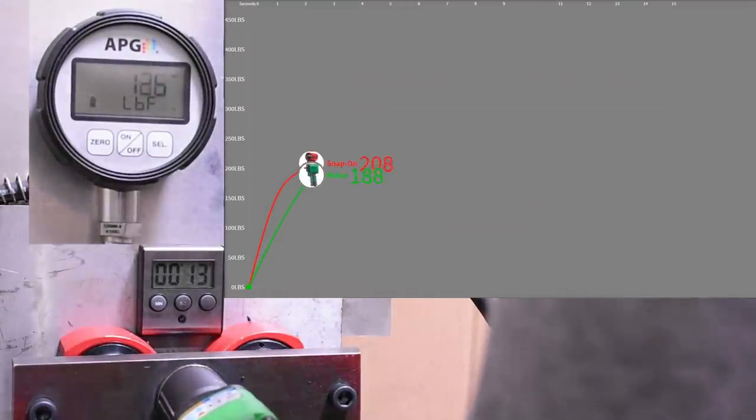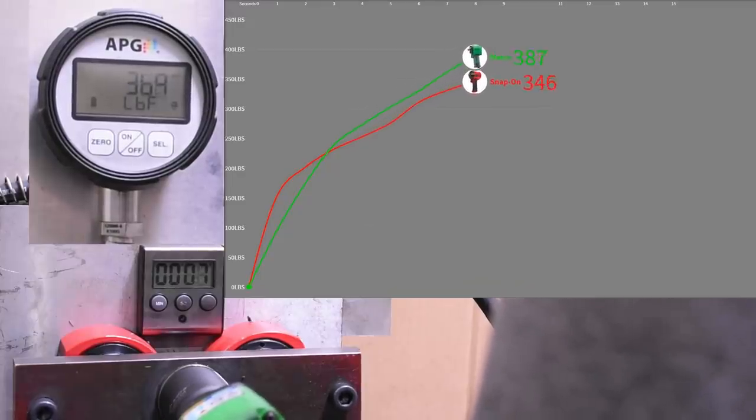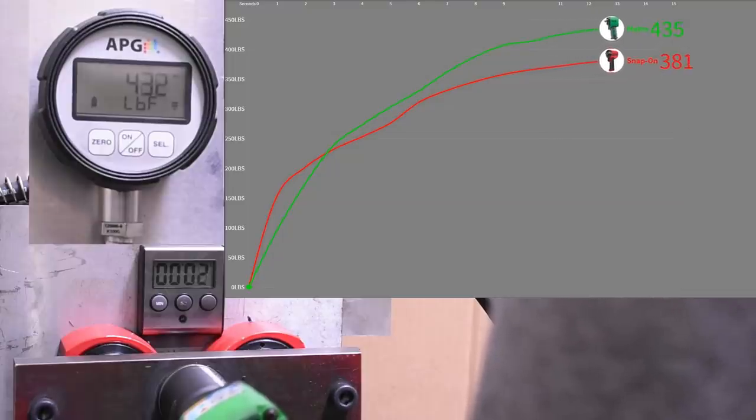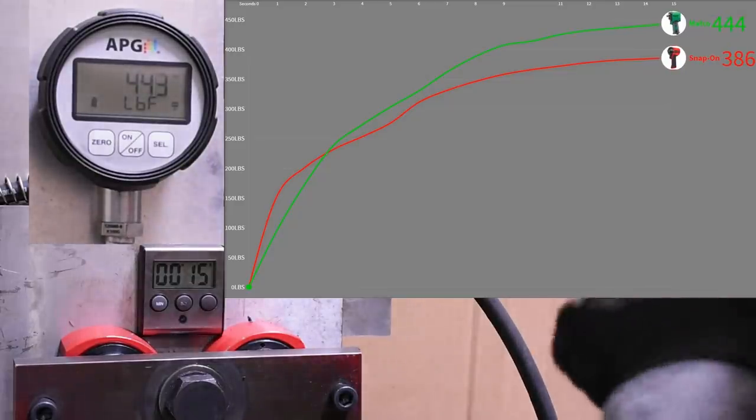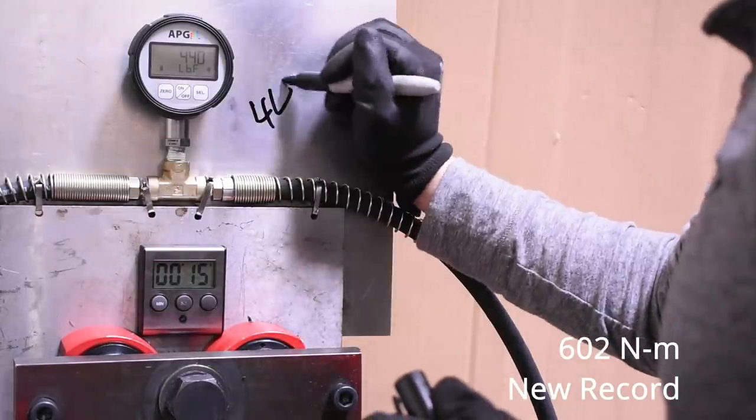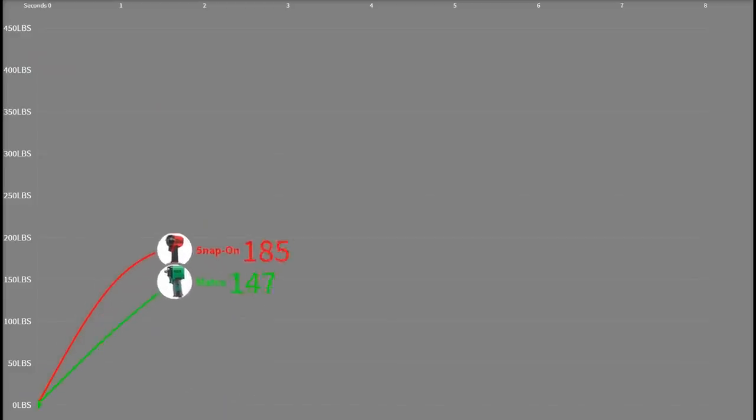It goes from making less power than an average stubby to more power in this BCS test than even our current number one ranked Nano overall. But let's not get ahead of ourselves - that Matco, now peppier than ever, has yet to go. 444 - yet another record in the category, sort of dusting the already woken up Snap-on and everything else in this size we've gotten our hands on.